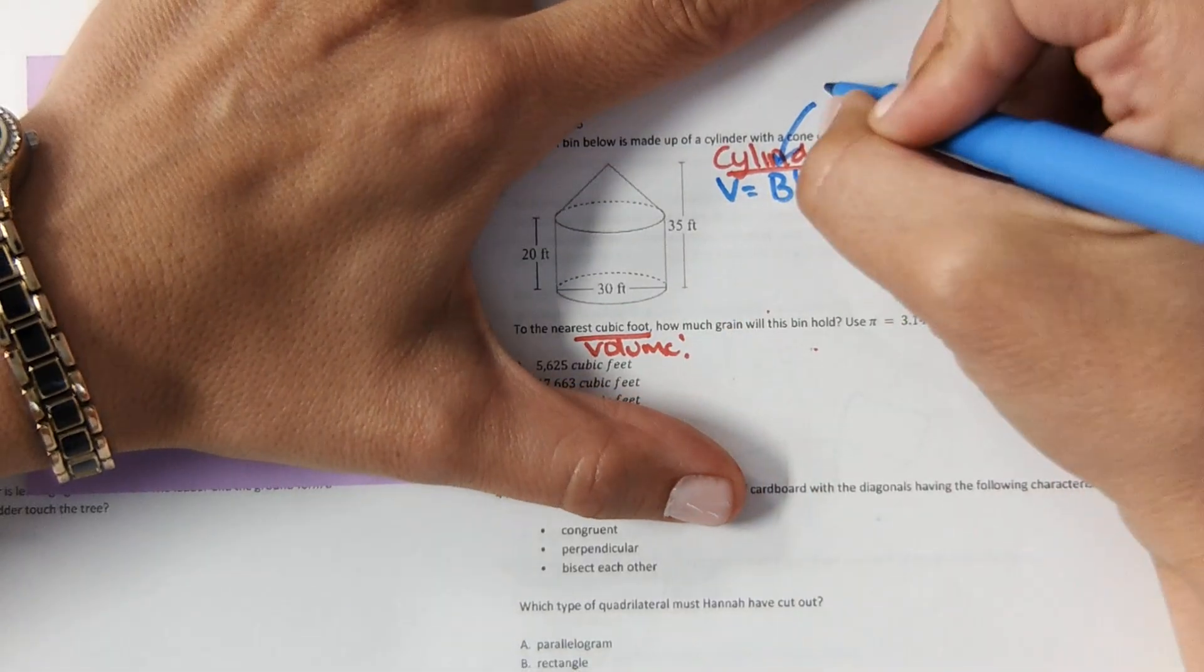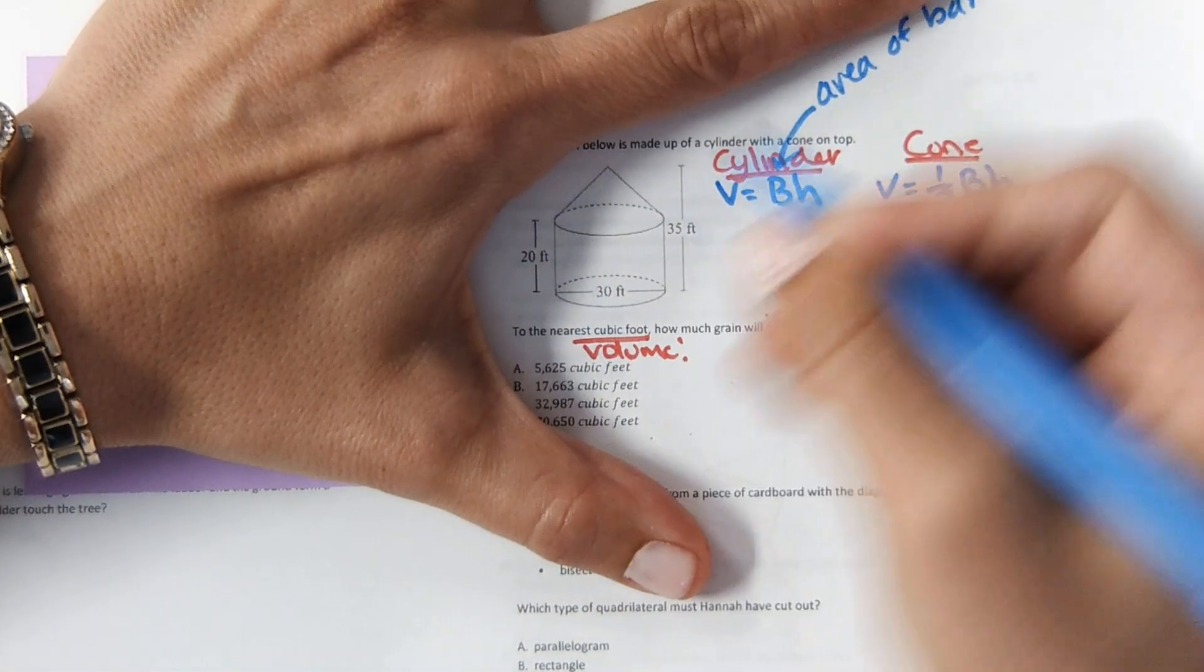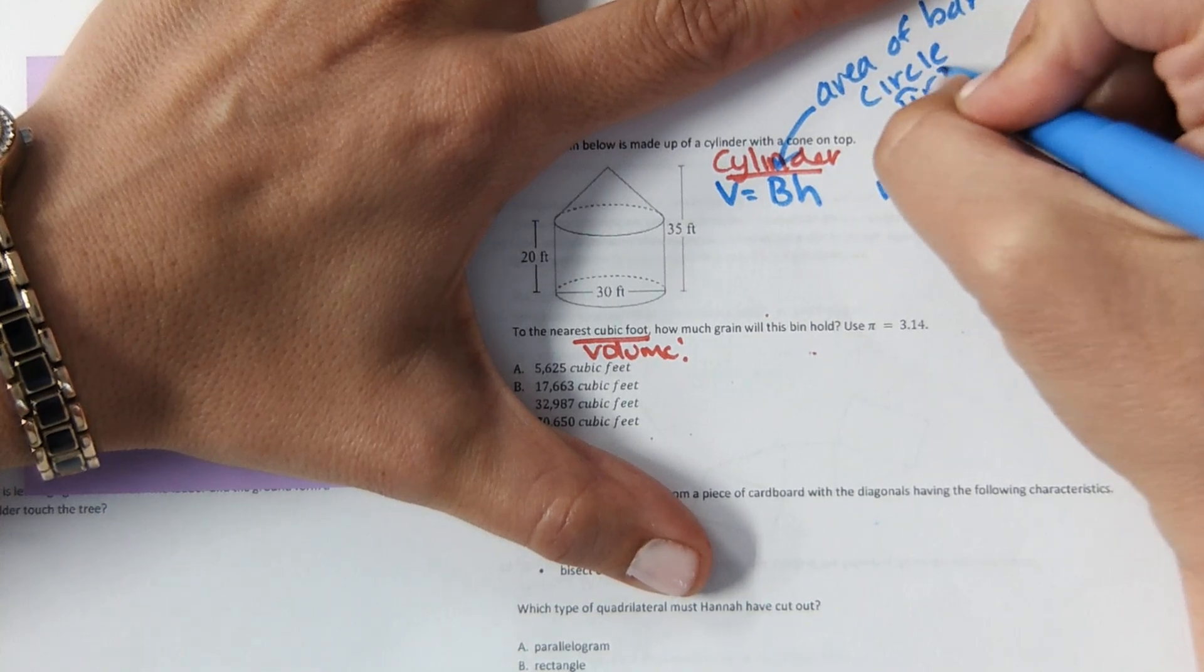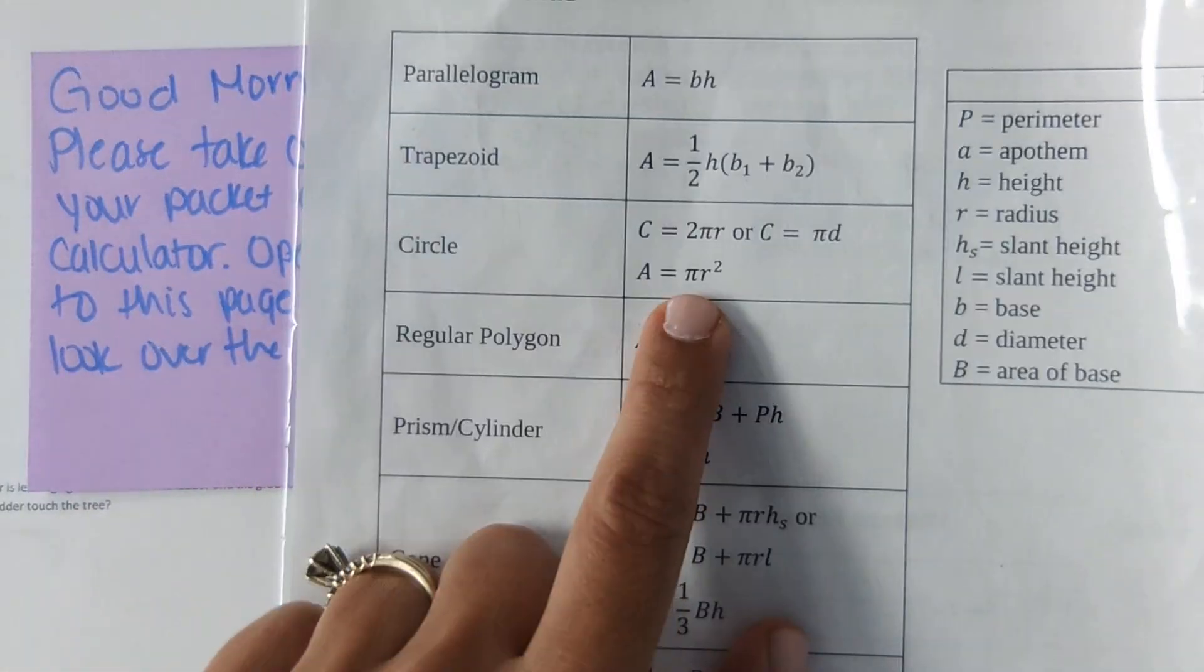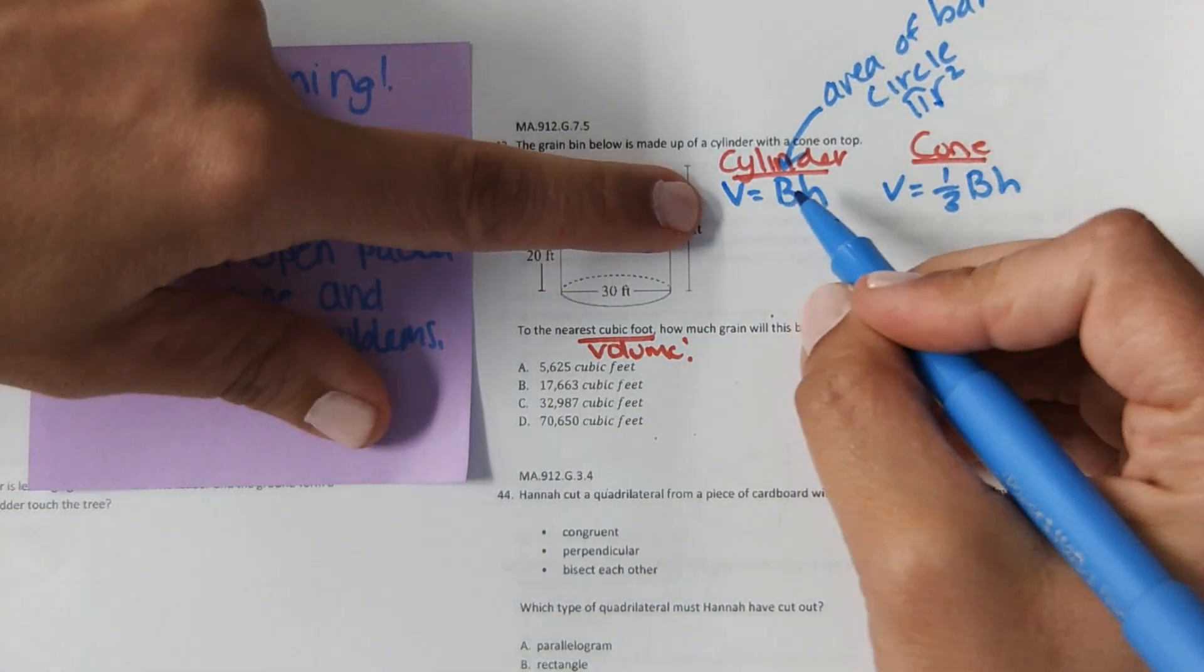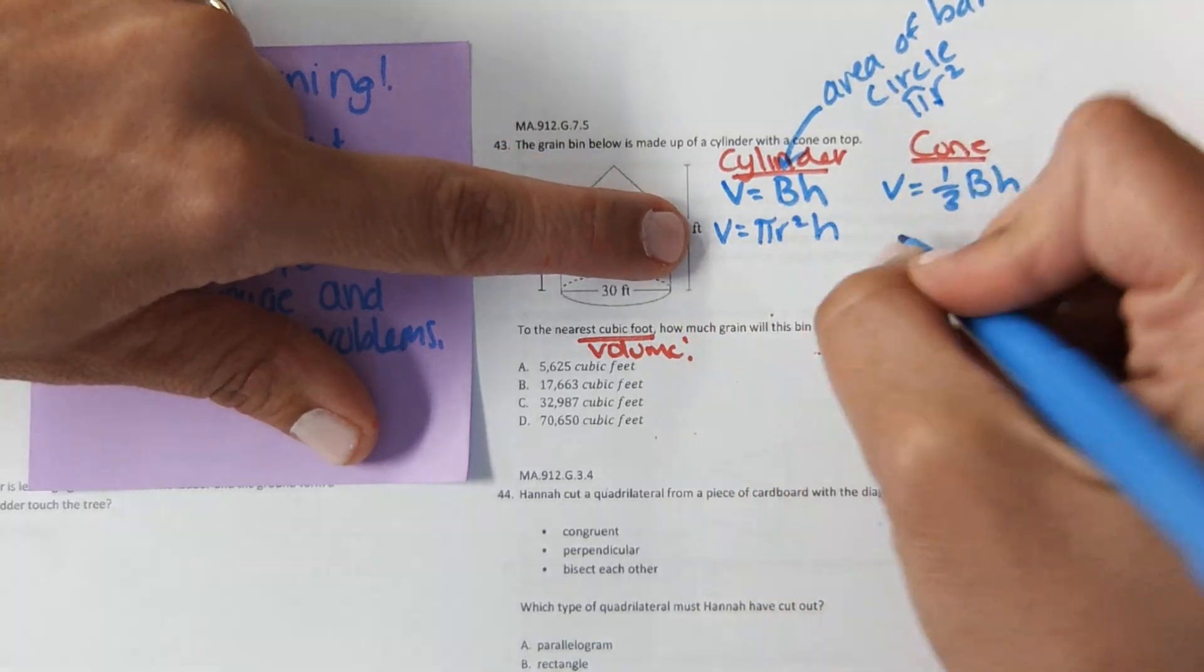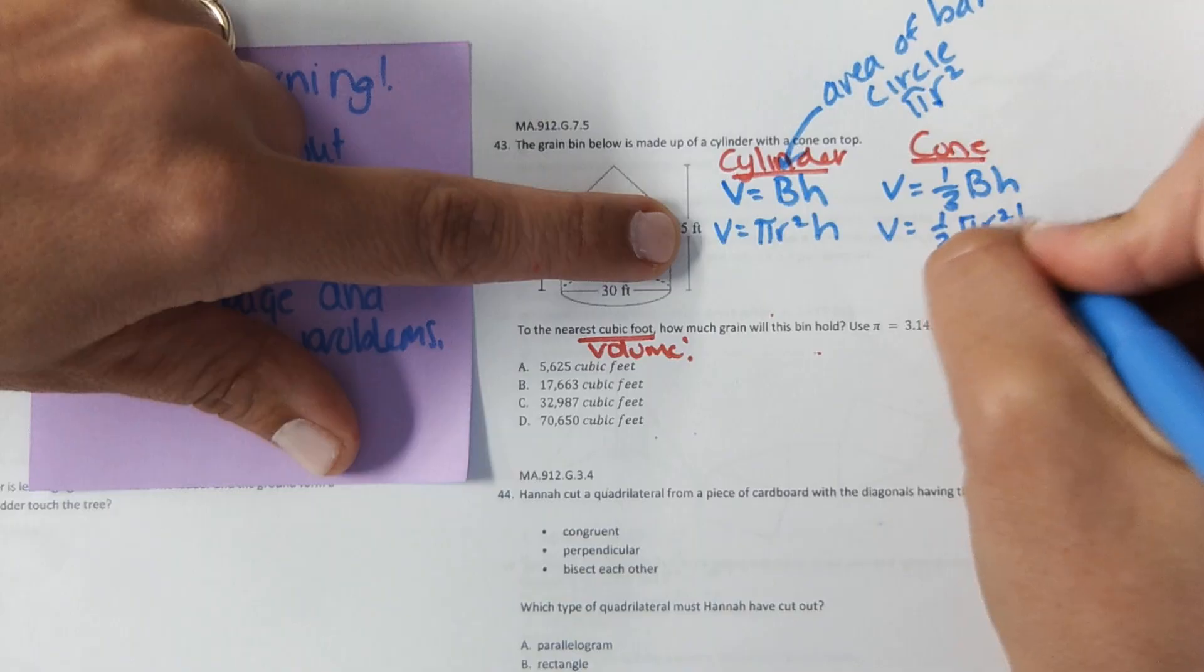The way I'm saying this area of the base is important. It's the area of this circle, the base. The area of a circle is pi r squared. If you didn't remember that, it's on here: circle, area, pi r squared. So you actually have to plug that in for the capital B. So volume equals pi r squared times the height. Same for the cone, the base is a circle, pi r squared times the height.